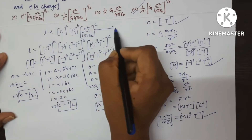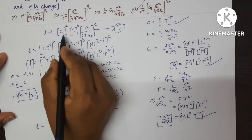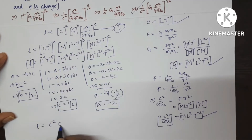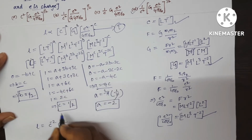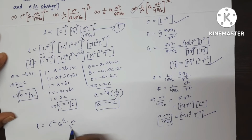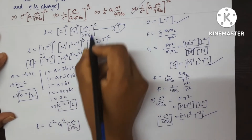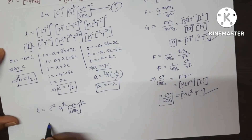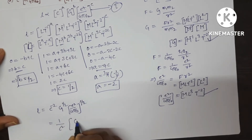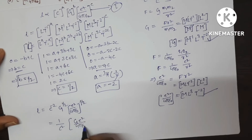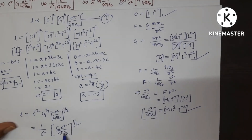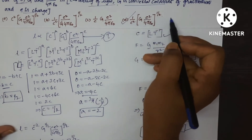Substituting into equation 1: L = C^(−2) · G^(1/2) · (E²/4πε₀)^(1/2), which we write as (1/C²) · √(G · E²/4πε₀). Let's check the options — D is the correct option. I hope you understand. Let's see the next question.